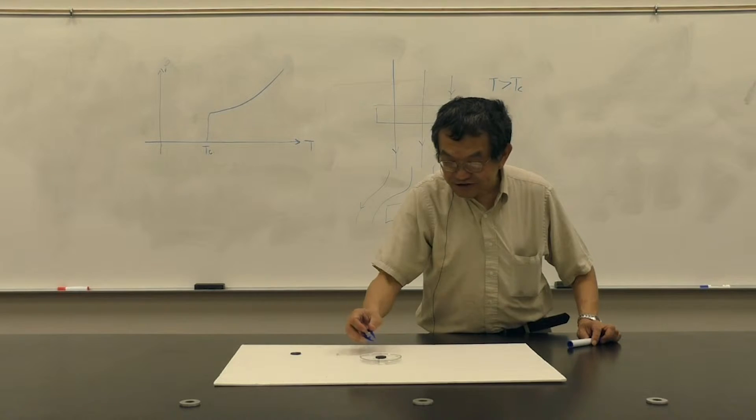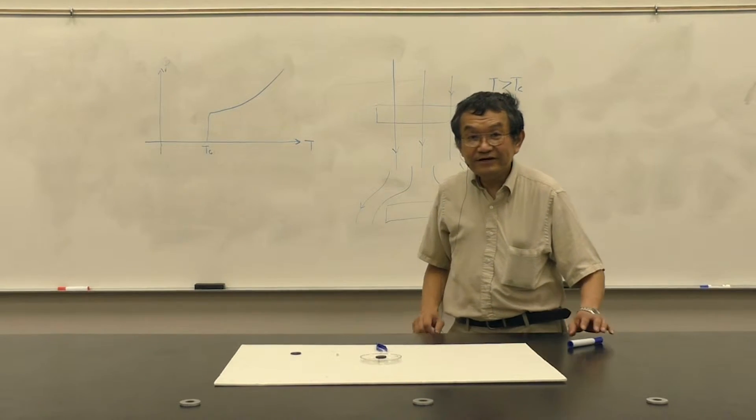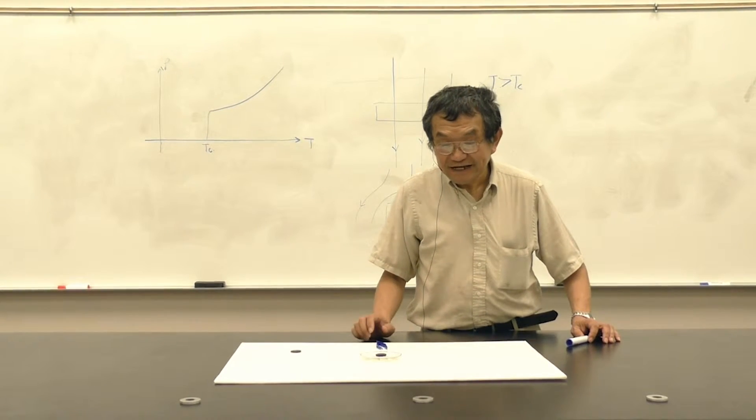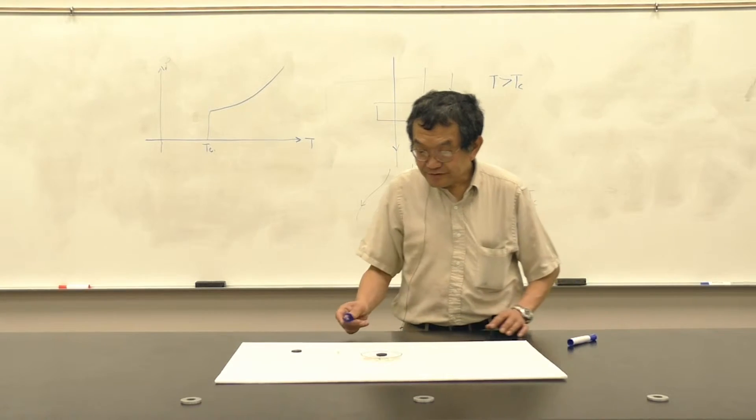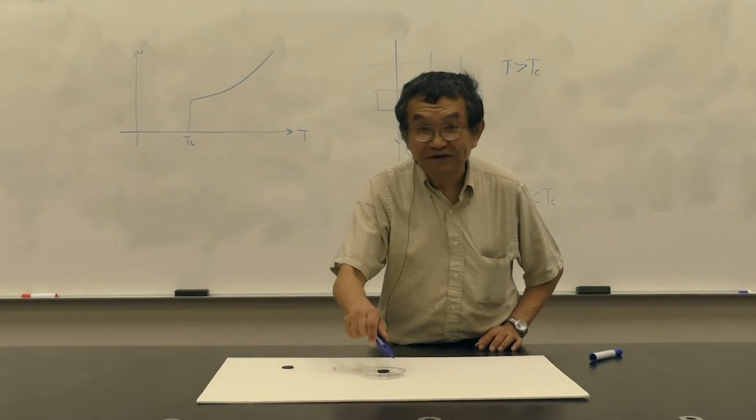This is called a high Tc superconductor because the critical temperature of this material is above the boiling point of liquid nitrogen at about 90 degrees K. Of course right now, the superconductor is still at room temperature.